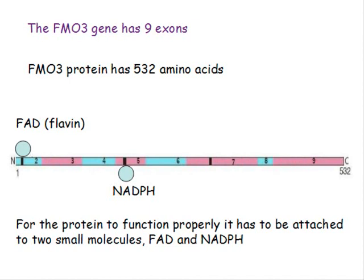The FMO3 gene has nine exons, and the RNA codes for 532 amino acids. In this picture, the pink and blue blocks represent the exon numbers that code for each part of the protein. You'll notice that the small molecule FAD — the flavin — is bound very close to one end of the protein, and there's another small molecule called NADPH which also has to be bound to FMO3. For the protein to function properly, it has to be attached to these two small molecules, FAD and NADPH.